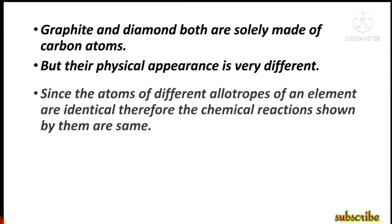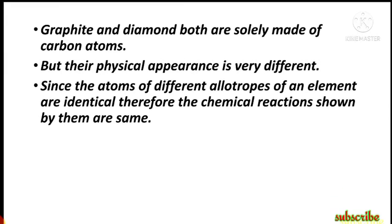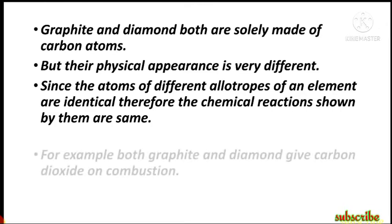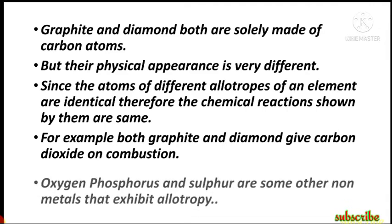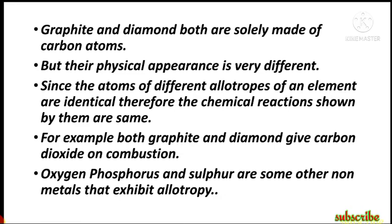Since the atoms of different allotropes of an element are identical, the chemical reactions shown by them are the same. For example, both graphite and diamond give carbon dioxide on combustion — because both are made up of carbon. Oxygen, phosphorus, and sulfur are some other nonmetals that also exhibit allotropy.